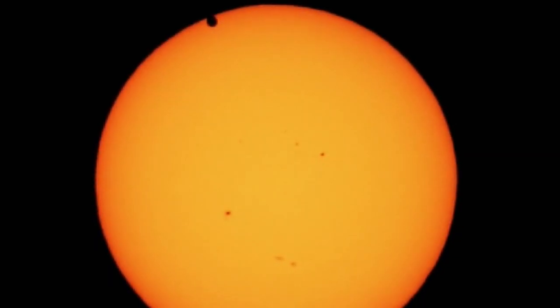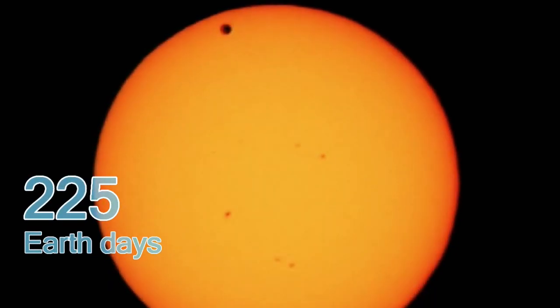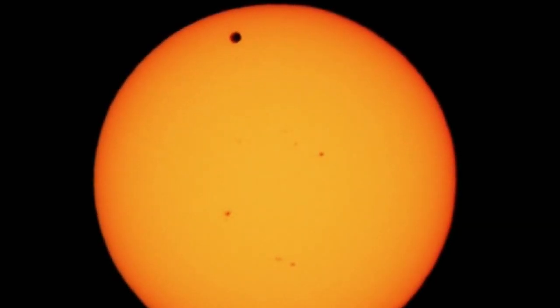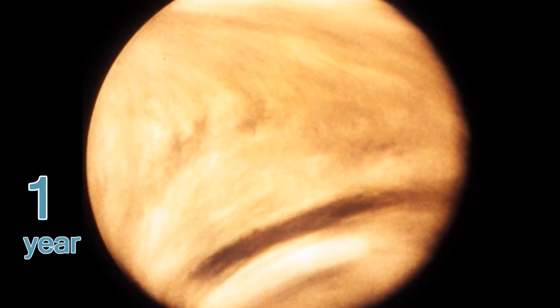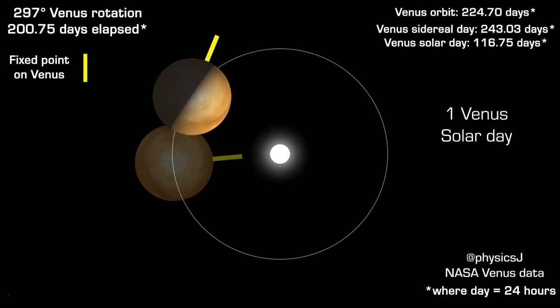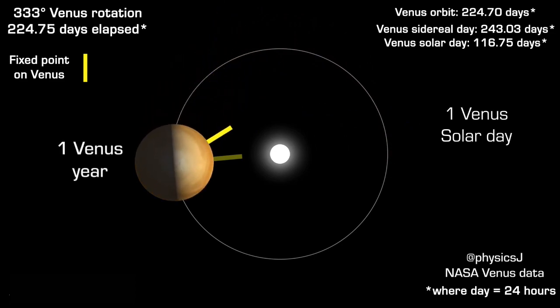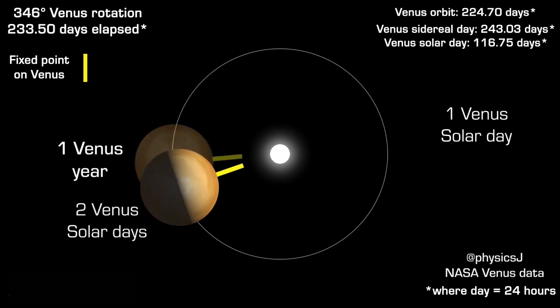This is because Venus takes 225 Earth days to complete one revolution around the sun, which equals one year. Meanwhile, this inhospitable planet needs 243 days to rotate around its own axis, which is what makes a day.